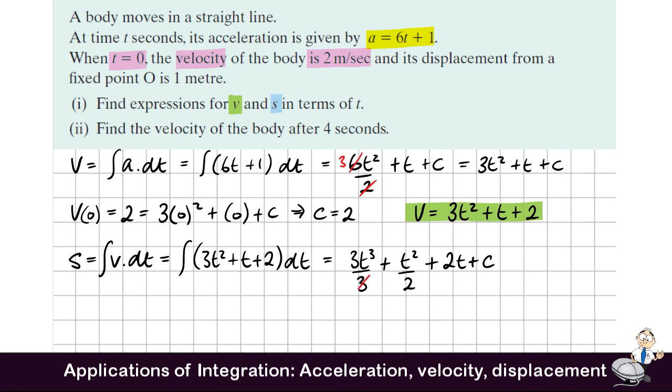But because we're given some initial conditions, we will be able to evaluate this. We know when t is 0, the displacement is 1 meter. So s equals 1, which equals, we're going to substitute 0 for t in the expression that we've just found. When we do this, we see that c must equal 1.